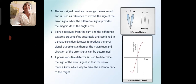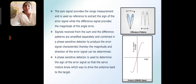The sum signal provides the range measurement and is used as a reference to extract the error signal, while the difference signal provides the magnitude of the angular error. Signals received from the sum and difference patterns are amplified separately and combined in a phase sensitive detector to produce the error signal characteristics, whereby the magnitude and the direction of the error signal can be determined. A phase sensitive detector is used to determine the sign of the error signal so that the servo motors know which way to drive the antenna back to the target.